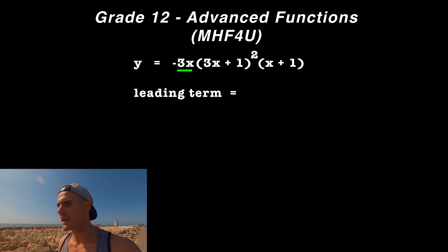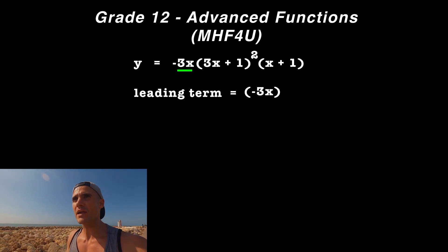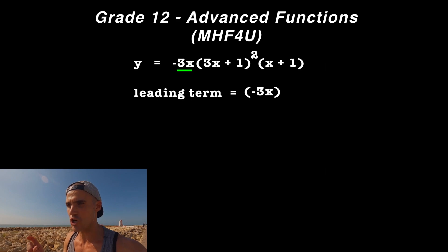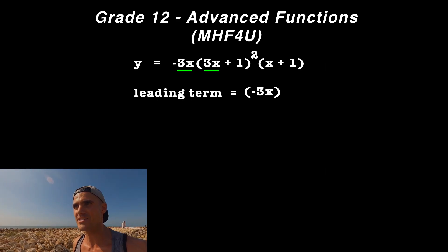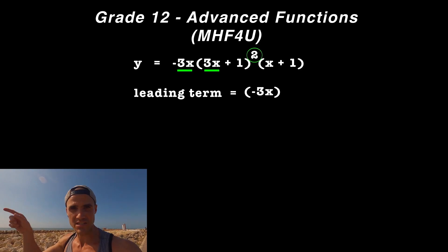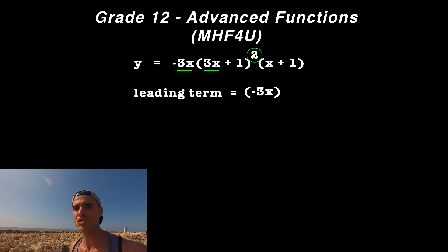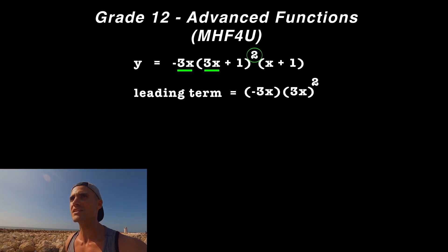The leading term would be -3x times, in the second factor, the leading term 3x, but notice that factor has an order of 2. It's taken to the power of 2. So we take that 3x and square it. In the last factor, x+1, the leading term is just x.